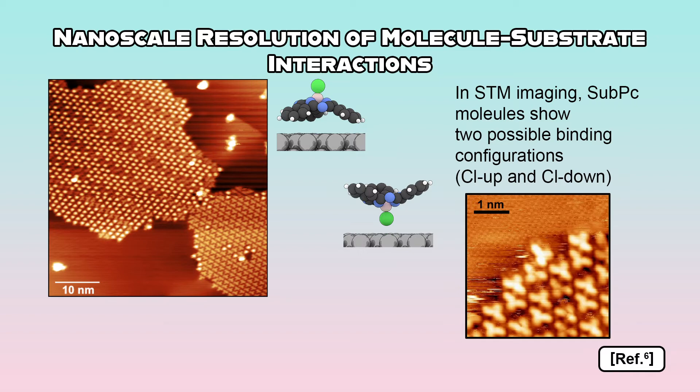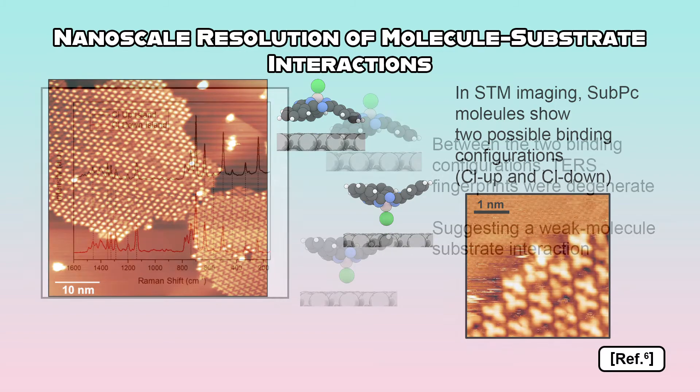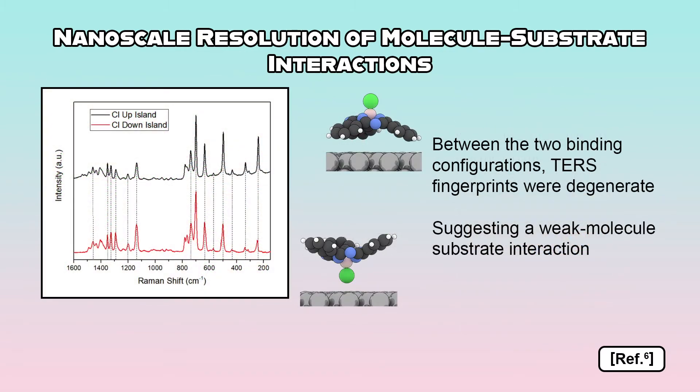Sub-PC molecules of the same binding configuration were found to aggregate and form highly polarized molecular domains with large collective dipole moments. Using the spatial resolution of TERS, it was possible to capture vibrational fingerprints that correspond to each type of molecular island. As shown here, we found the vibrational fingerprints to be largely degenerate, suggesting a weak molecule-substrate interaction.